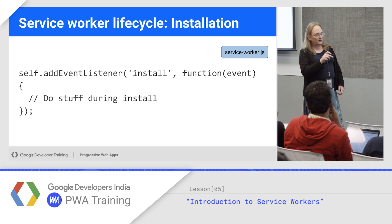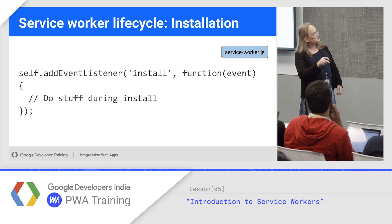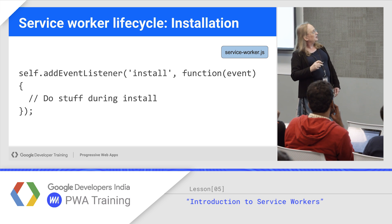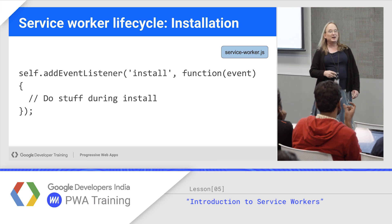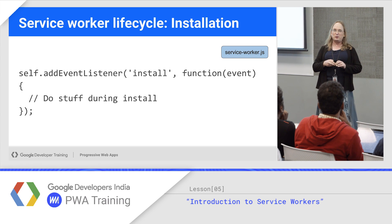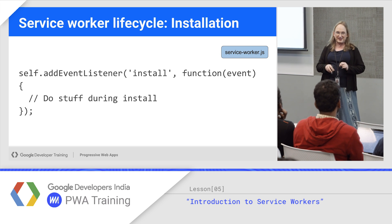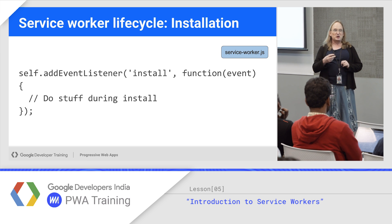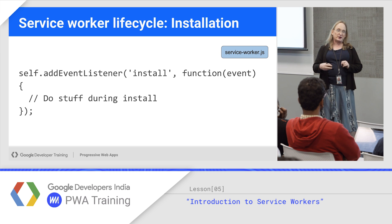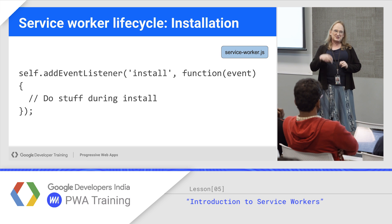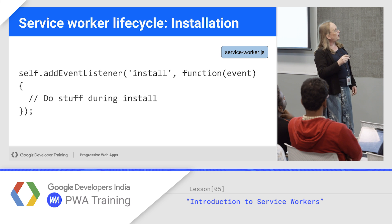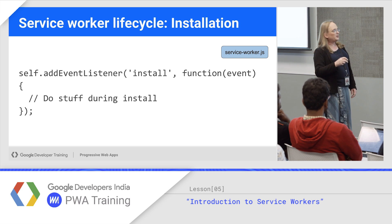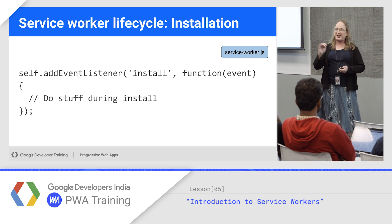Inside the service worker, notice the service worker.js badge. You call self.addEventListener — this adds an event listener to the service worker. 'Self' is a JavaScript keyword: outside a worker it means window, inside a worker it means the worker itself. So self.addEventListener for the 'install' event is normally where you would build a cache.